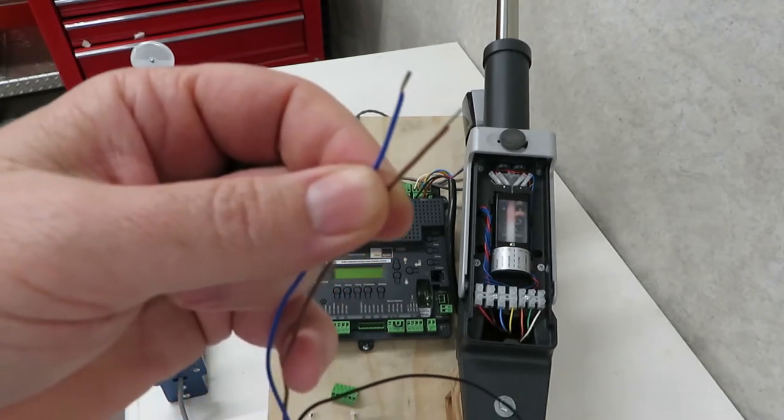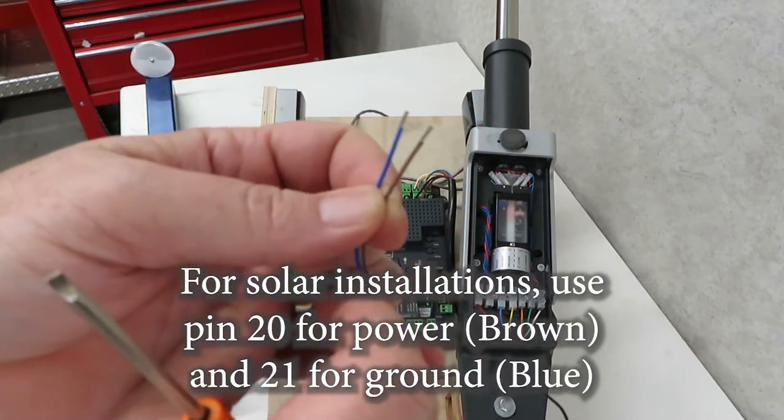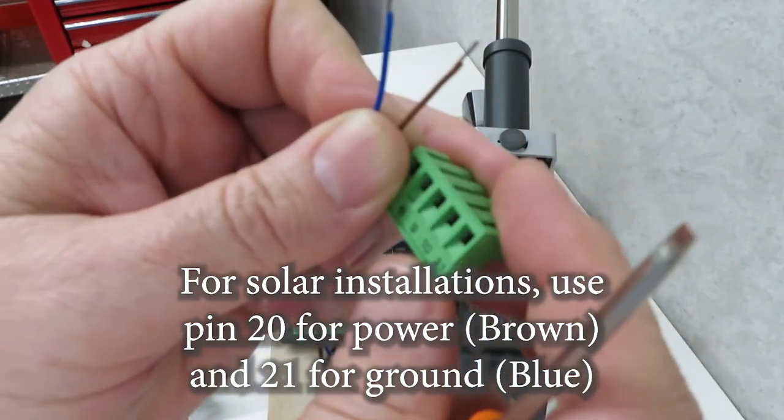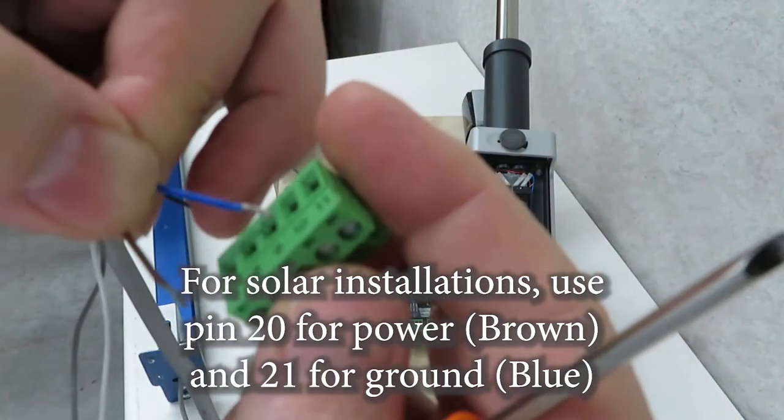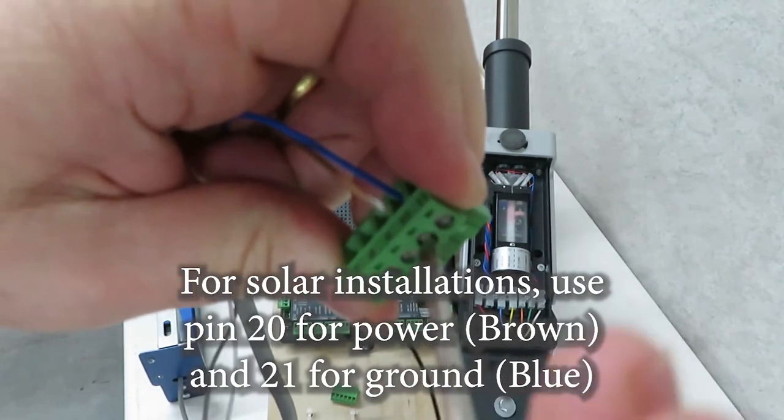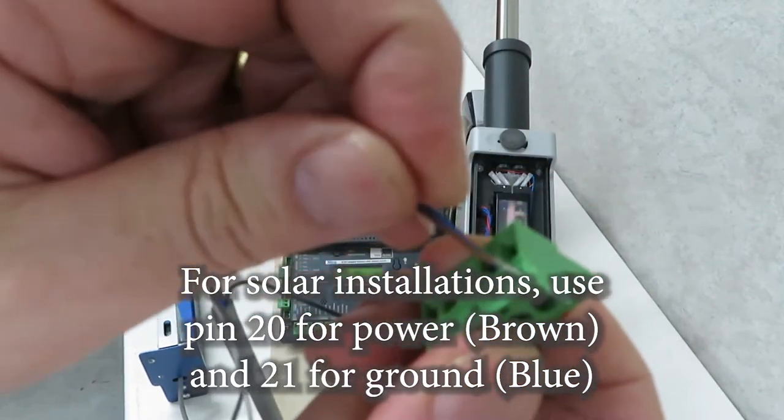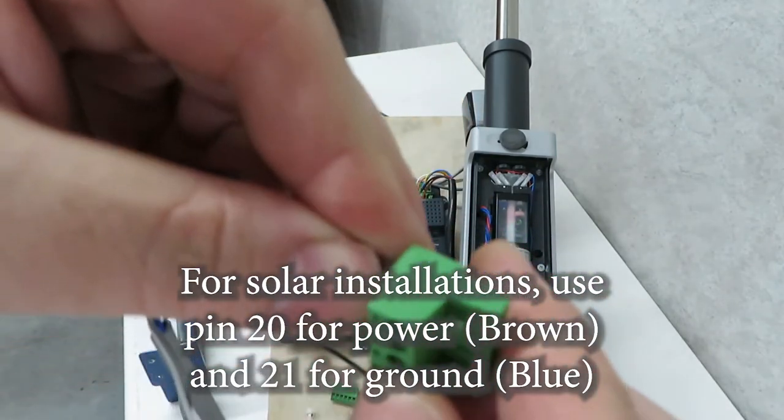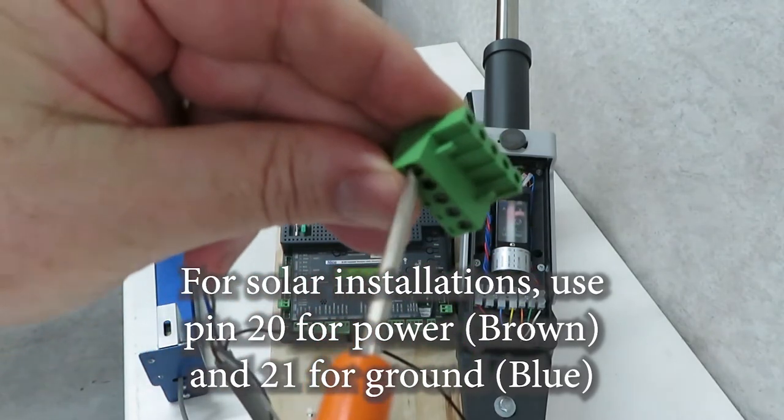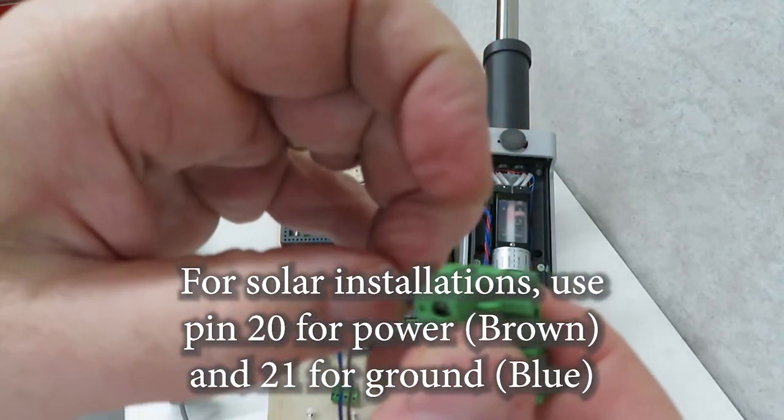So we're going to start by wiring up the power. The blue wire goes to pin 10 and the brown wire goes to pin 11. The pin numbers are actually right here on the connector so we got 10 and 11, blue to 10, power brown to 11 so let's just hook those up real quick. So blue to 10. Tighten it down and brown to 11. There we go. Give those guys a little tug. Those are in there good.